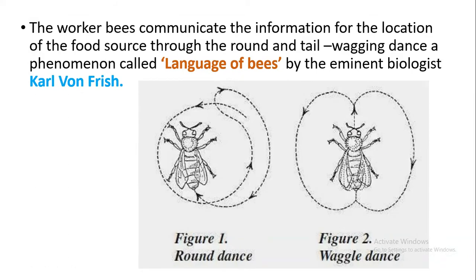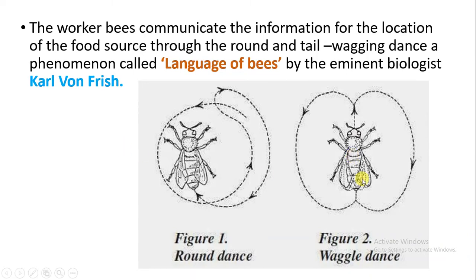Honeybees communicate and exchange information with each other by performing a kind of dance. That dance is called the round dance and the tail wagging dance. In the round dance, the honeybee moves in a circular motion. In the tail wagging dance, the honeybee moves to the left side and wags her tail in the center, then moves to the right side, and again wags her tail in the center — this movement is called wagging. This is the language of bees, and it was discovered by biologist Karl von Frisch.